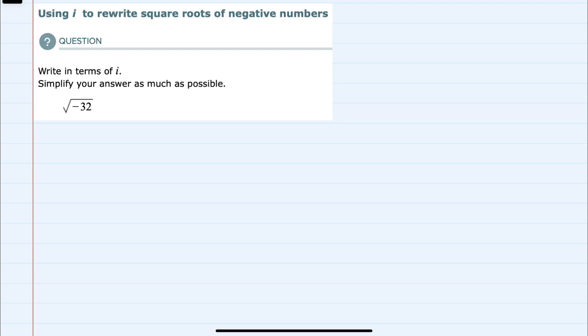In this video, I'll be helping you with the Alex problem type called using i to rewrite square roots of negative numbers. We're asked to rewrite this in terms of i and to simplify as much as possible.